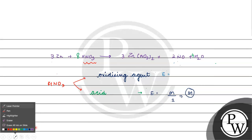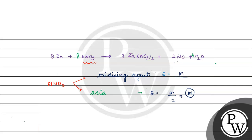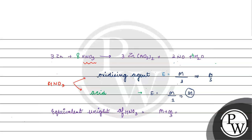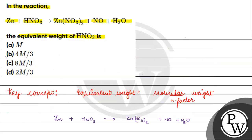So the equivalent weight as oxidizing agent = molecular weight divided by N factor = M/3. The total equivalent weight of HNO3 is M plus M/3, which equals 4M/3. Coming back to the question, the correct answer is option B.